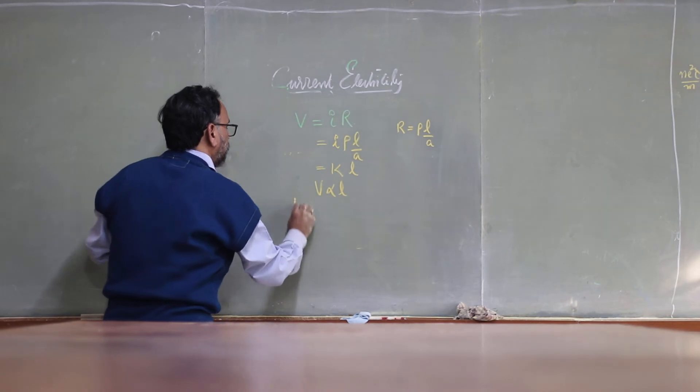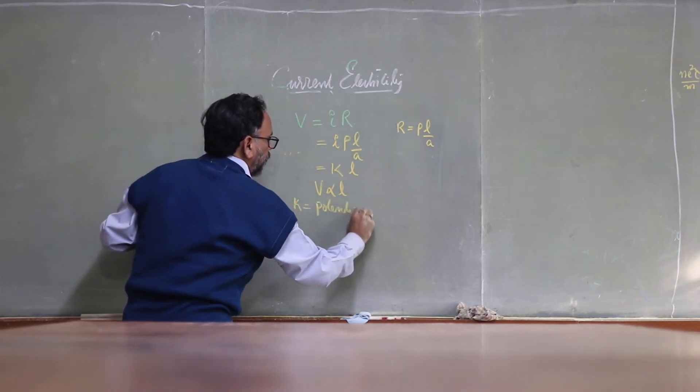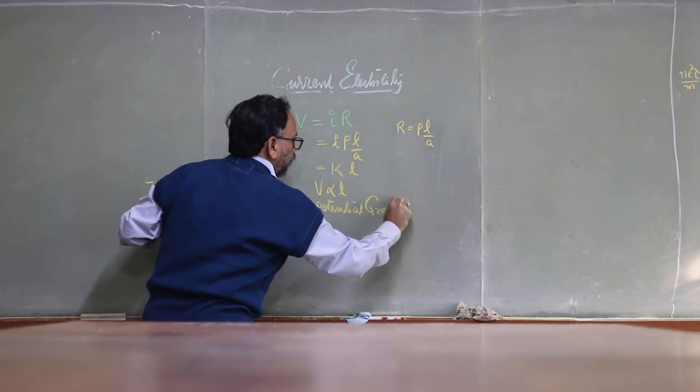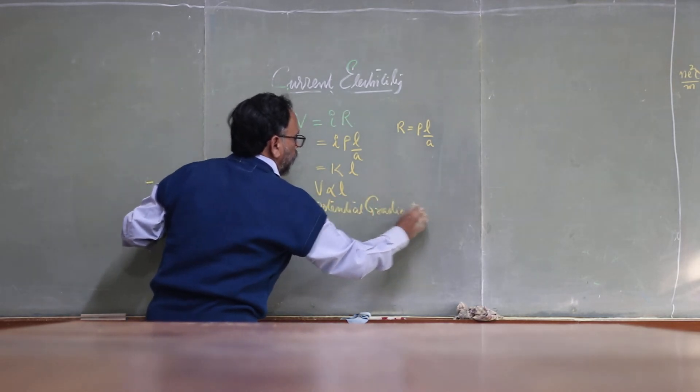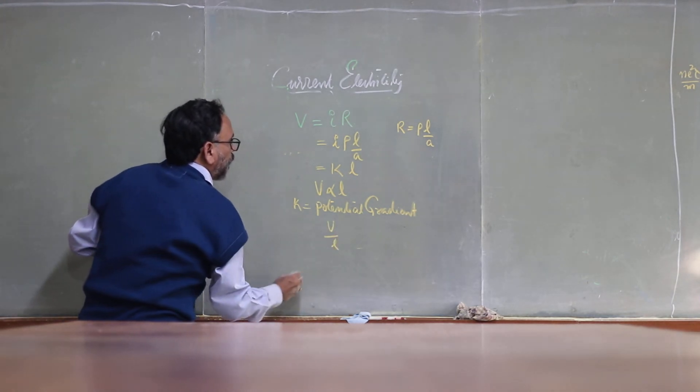This K is called potential gradient. So the potential gradient is V by L.